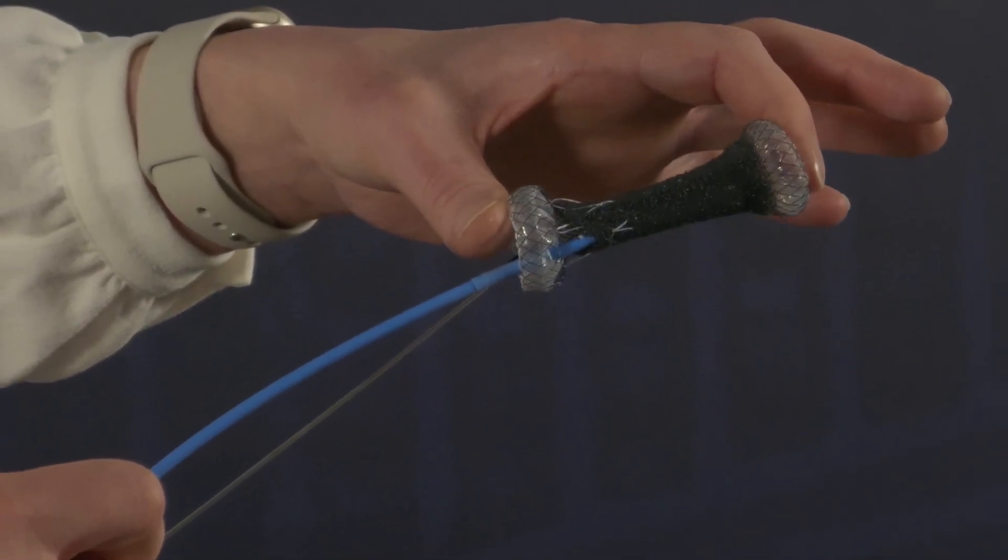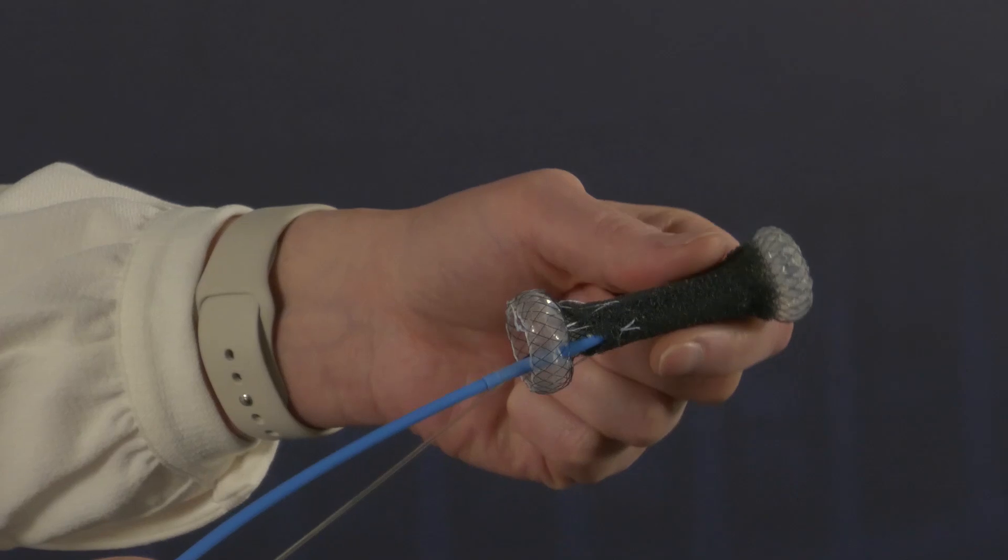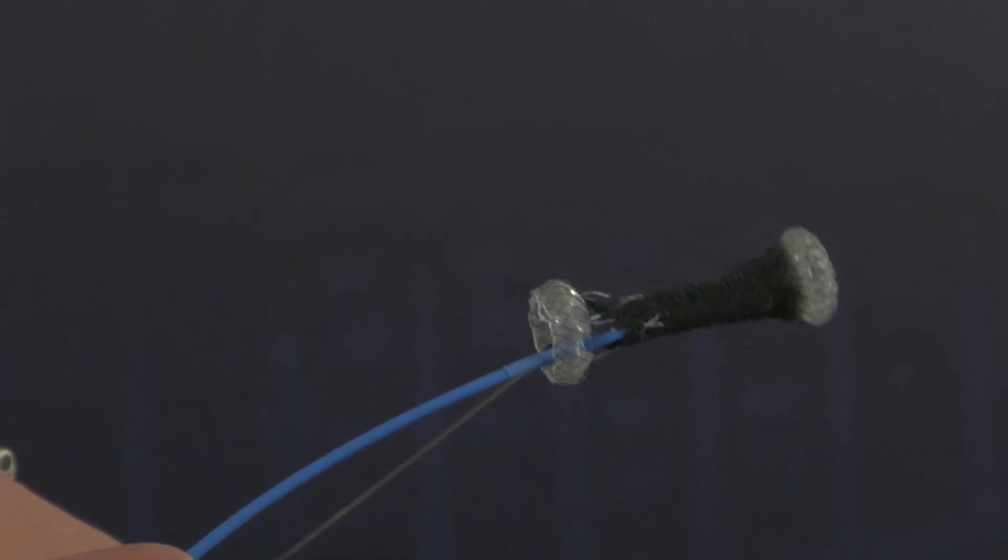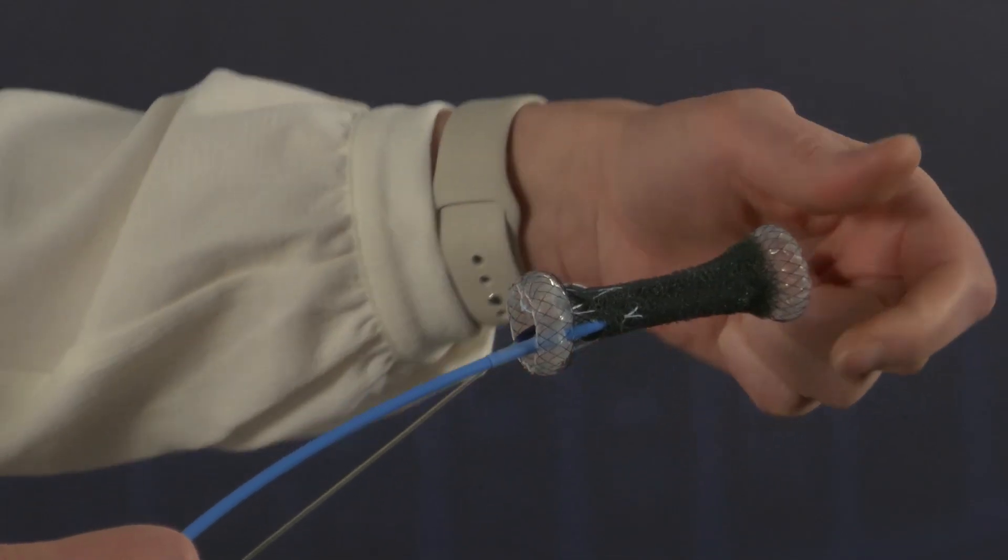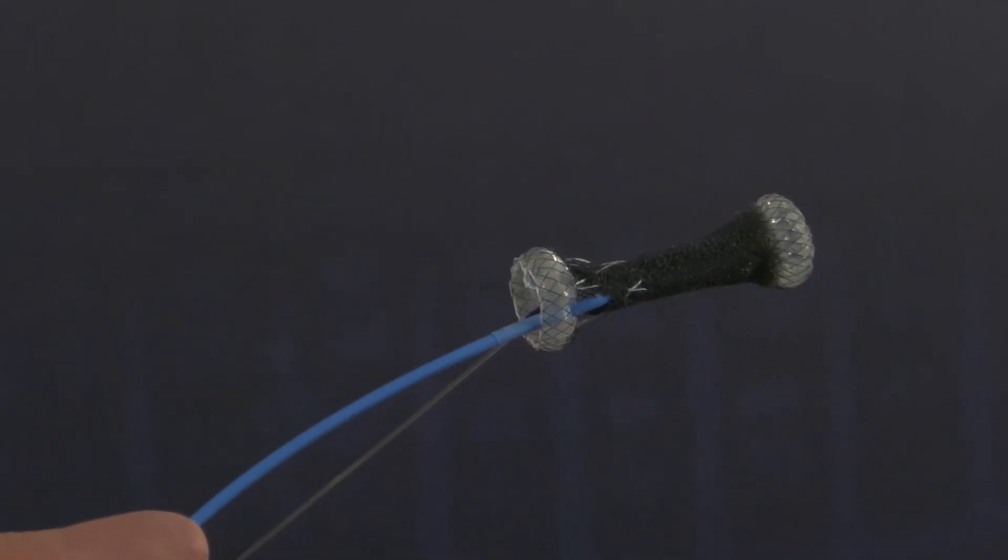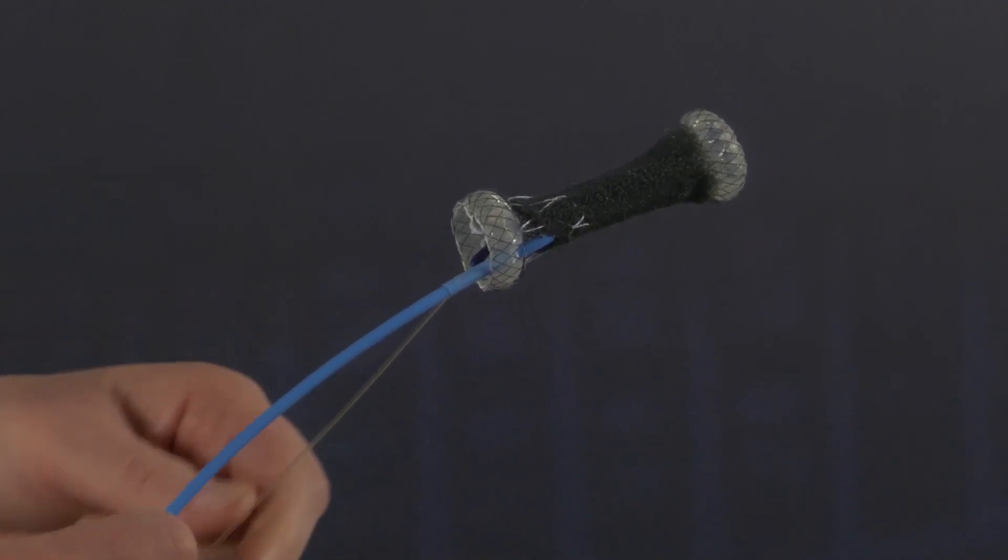The stent is seven centimeters long and this part is five centimeters, covered with the sponge on the outside. The diameter is 14 millimeters and the flanges are three centimeters. That's also good to have in mind if you're working in a narrow esophagus, for example.